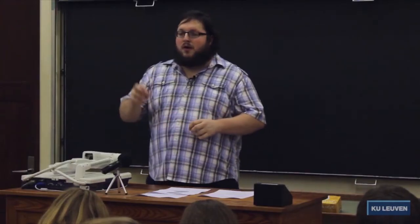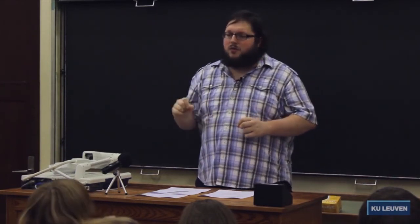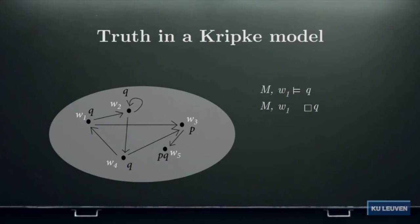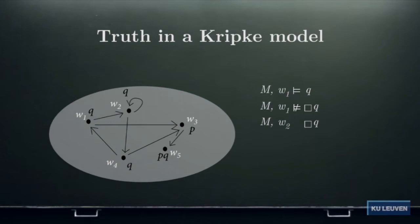Modal logic says that for box Q to be true at W1, Q must be true in all possible worlds accessible from W1. W1 sees W2 and W3, so Q must be true at both. But while Q is true at W2, it is not true at W3. So box Q is not true at W1. However, the same formula box Q is true at W2, because W2 sees itself and W4, and Q is true in both of those worlds.